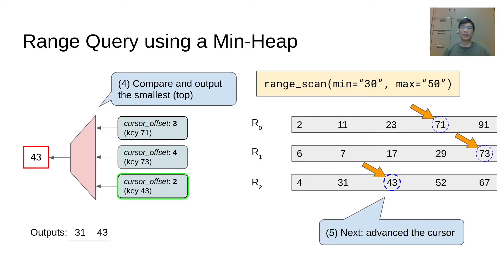Similarly, to retrieve the next key, the cursor on R2 should be advanced to skip key 43. Again, we compare the keys and output key 52, which is greater than the max key. Now the range query is finished.